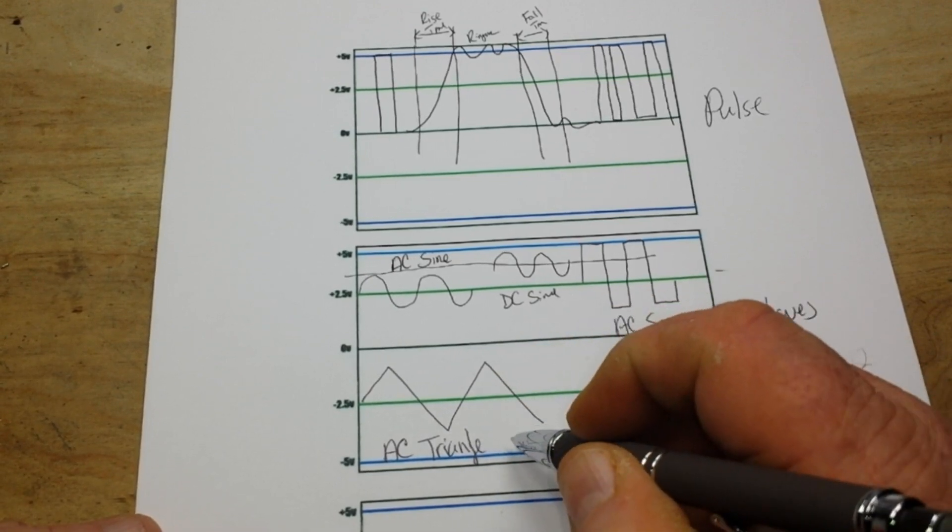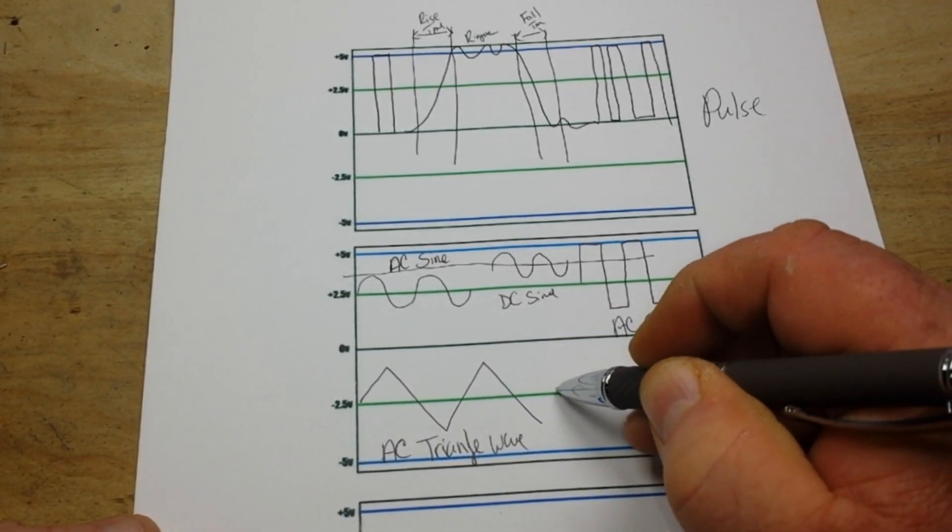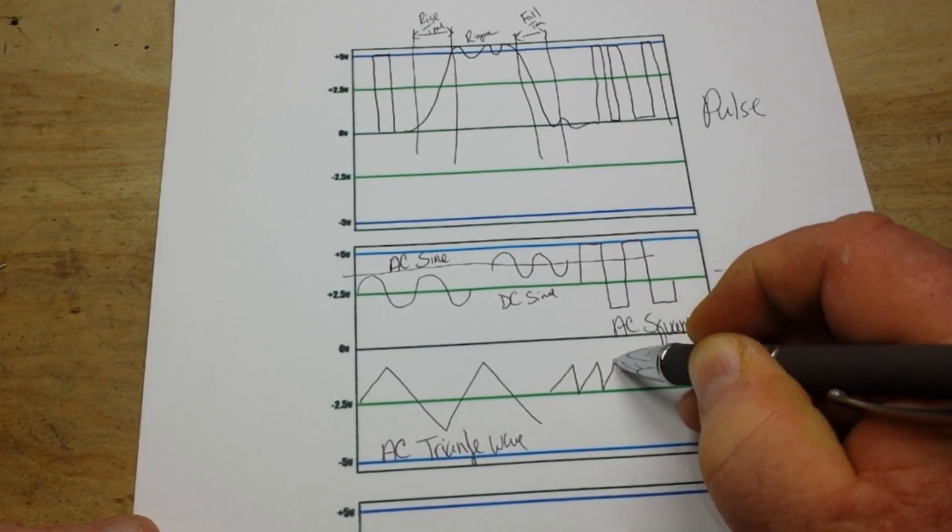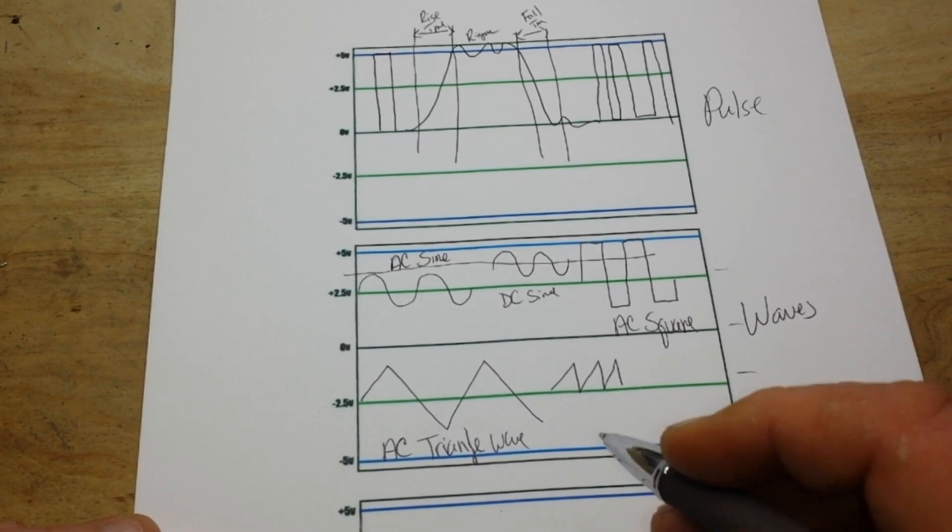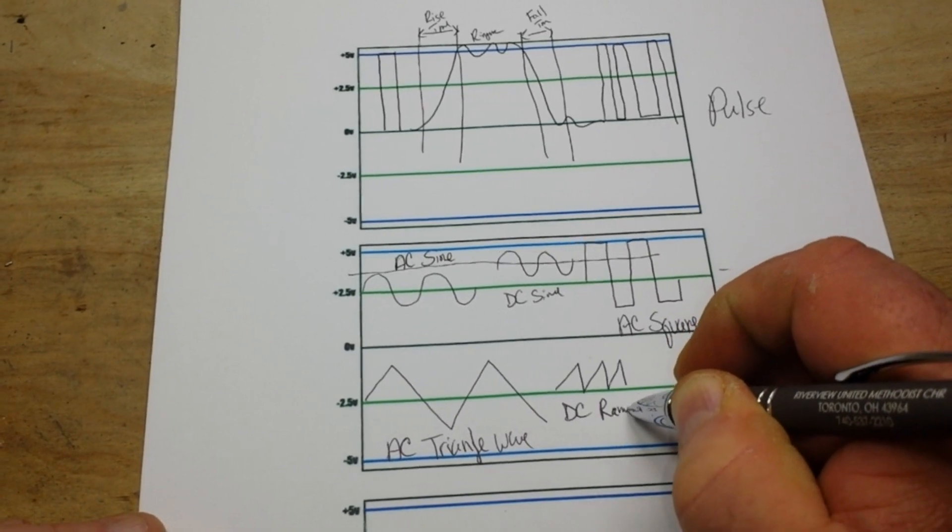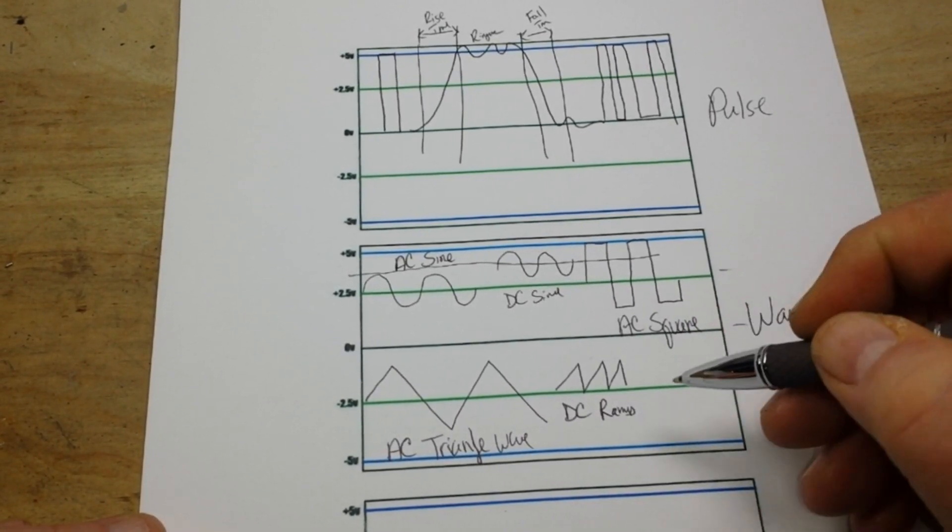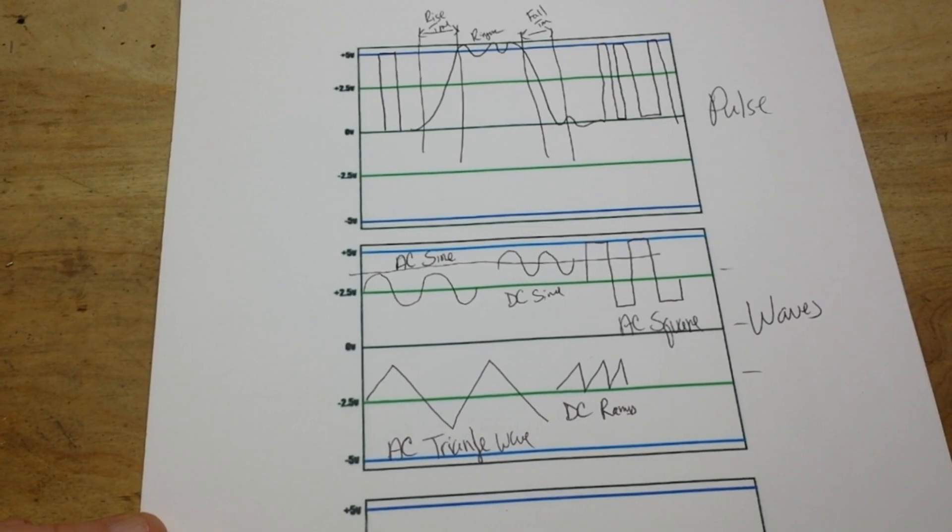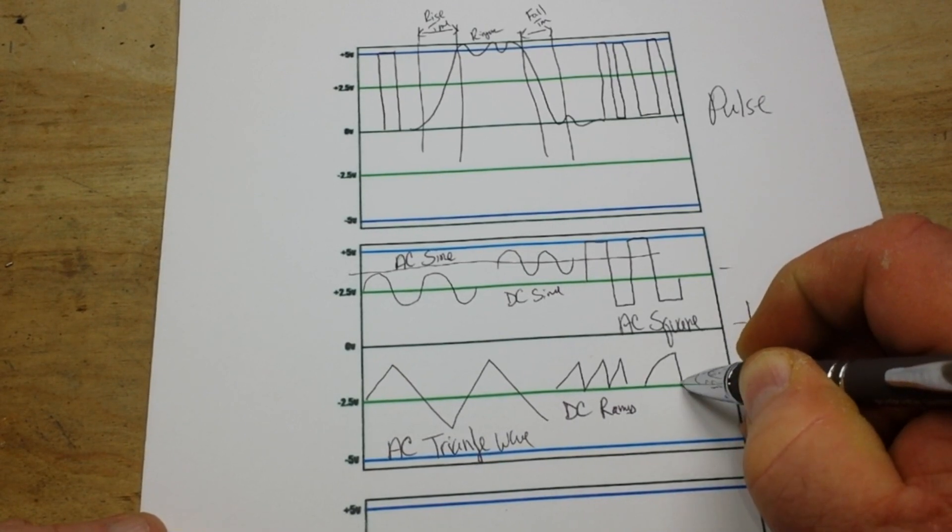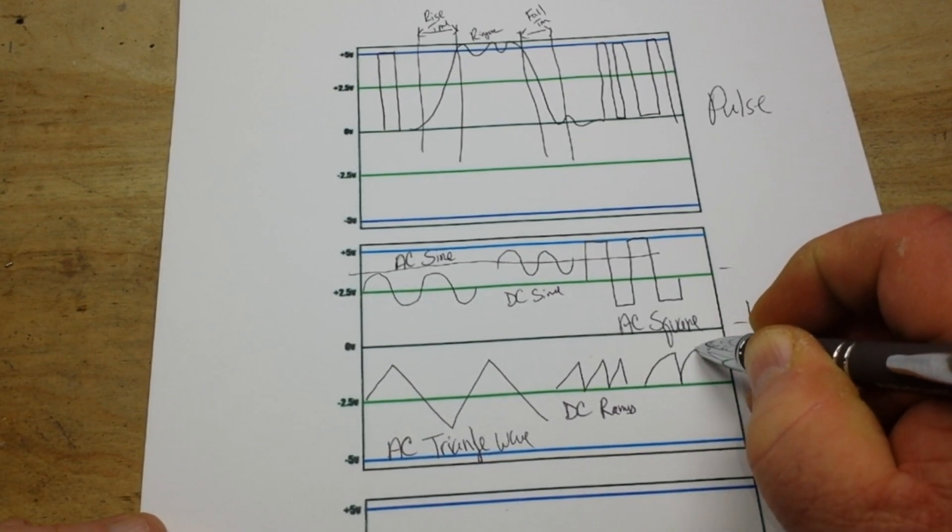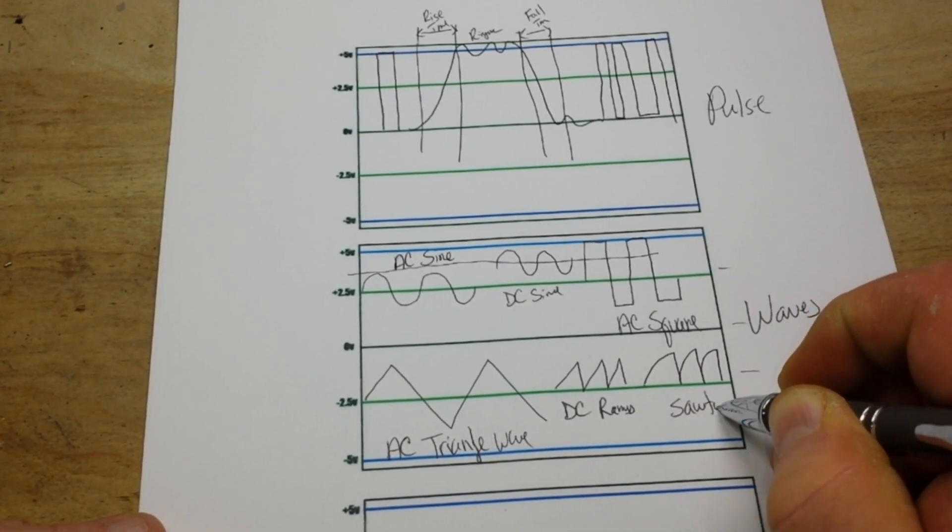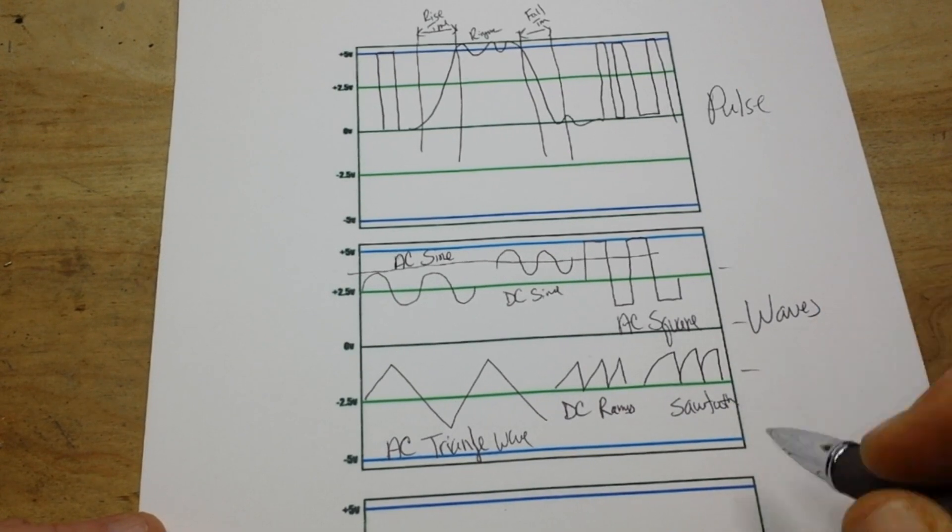All right, triangle wave. And how about this one? What would that be? Well that would be a DC, AC ramp wave. Some people call that a sawtooth, but I consider a sawtooth wave to be more like this. This is what we call a sawtooth and I'm going to tell you what the difference is.